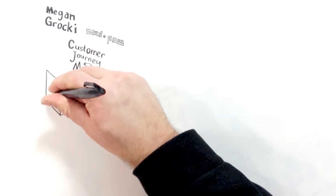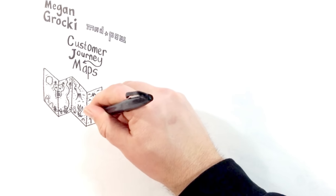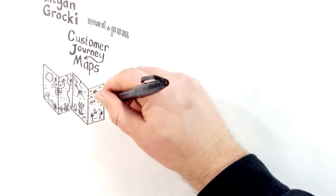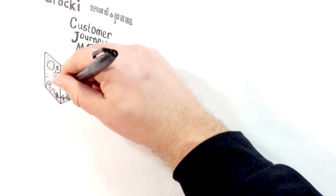Journey maps are a visual interpretation of an individual's relationship with an organization, service, product, or brand over time and across channels.